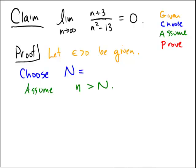And when we do that, hopefully we will be able to prove that if we take our expression, n plus 3 over n squared minus 13, I'm hoping we will be able to show that this can be made less than epsilon. And if we can do this, then we have performed our proof.